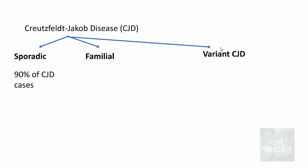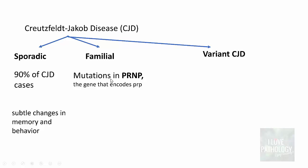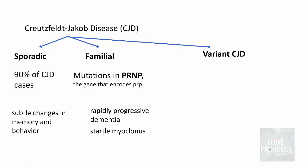Sporadic forms account for 90% of CJD cases and involve subtle changes in memory and behavior. Familial forms result from mutations in the PRNP gene, which encodes the prion protein; these mutations cause a high rate of conversion of normal to abnormal form, resulting in rapidly progressive dementia. Patients also manifest with startle myoclonus — an involuntary sudden jerky movement evoked by a sudden or unexpected acoustic stimulus.